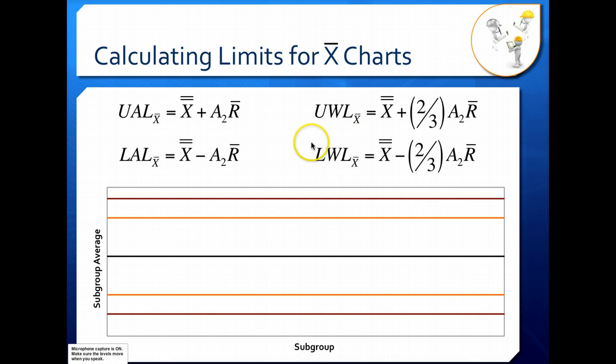Your upper and lower warning limits, or UWL and LWL, are calculated in the same way as your upper and lower action limits, except for this time you're multiplying your A2 times R-bar term by two-thirds. And that's because, if you remember back to our previous lecture on control charts, our action limits were set at three times our standard error.